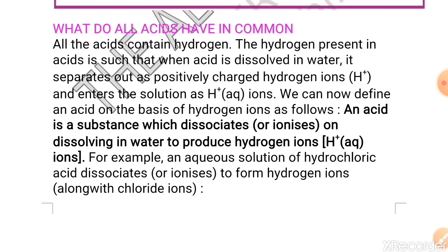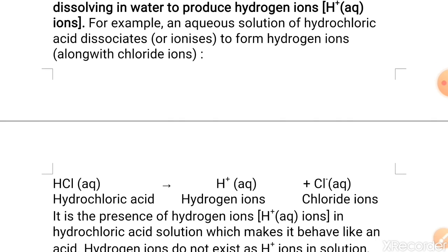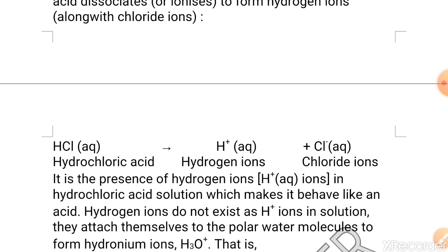Now we will look for an example. Here you can see example of hydrochloric acid, HCl. When HCl is taken in aqueous form or say we have diluted it by adding some water, at that time your HCl will dissociate into hydrogen ion and chlorine ion. Chlorine ion is also called chloride ion.